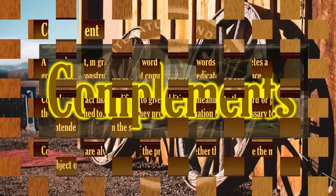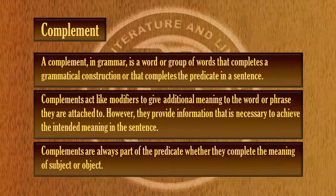What is a complement in grammar? A complement in grammar is a word or a group of words that completes a grammatical construction, or that completes the predicate in a sentence. Without the complement, the sentence or part of the sentence will make no sense. Complements act like modifiers to give additional meaning to the word or phrase they are attached to, providing information necessary to achieve the intended meaning.